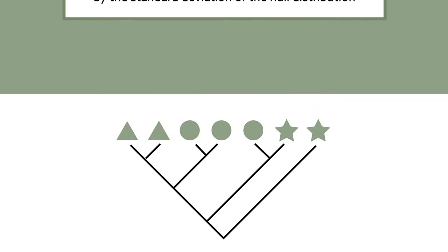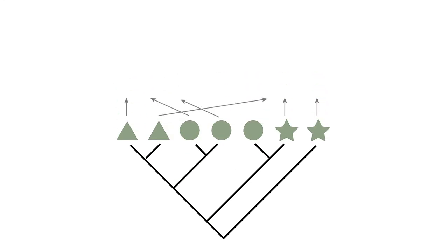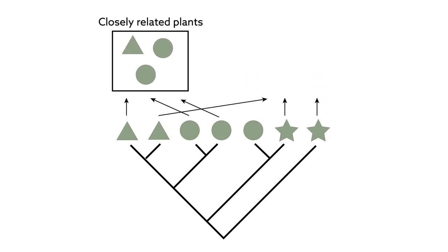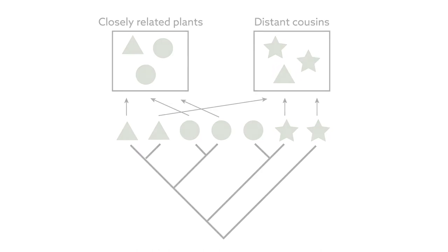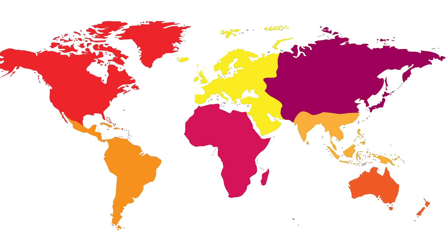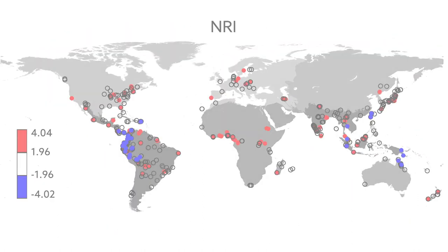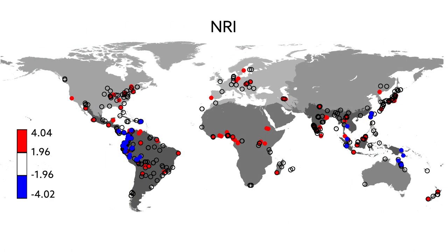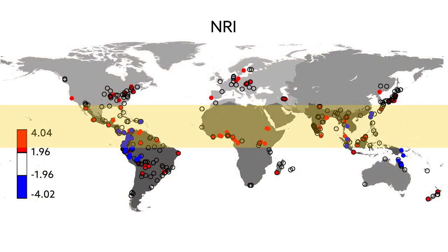They calculated a net relatedness index of woody plant communities — a measure of the degree to which plants tended to cluster with plants of a similar evolutionary origin rather than with more distant cousins. The team then mapped that index on two scales: a regional one spanning individual continents and a global one.